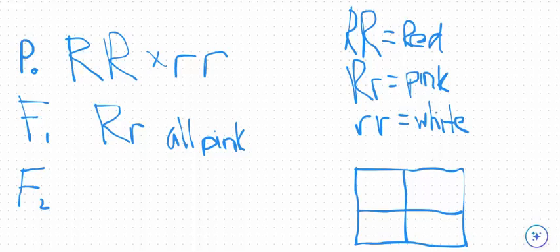In this video, we're going to walk through using a Punnett square to calculate a phenotypic ratio for a cross where we have incomplete dominance.